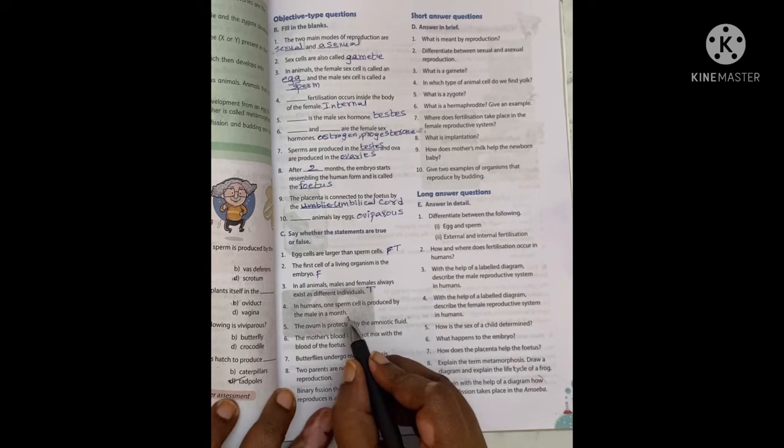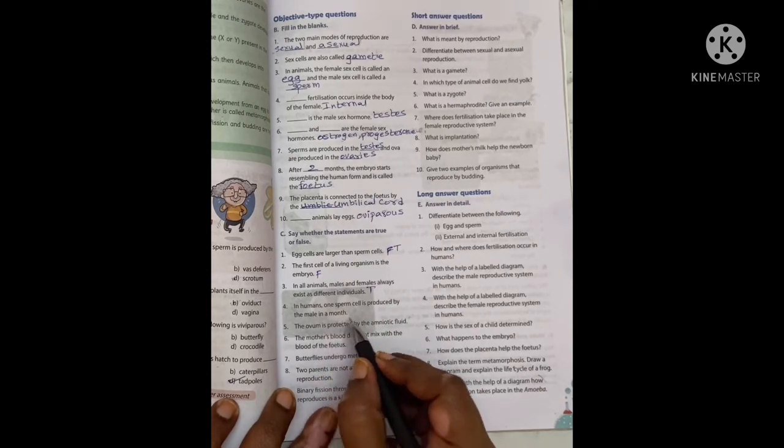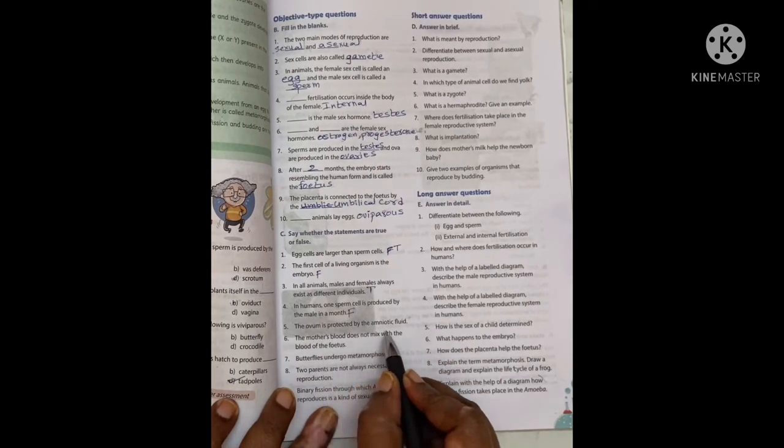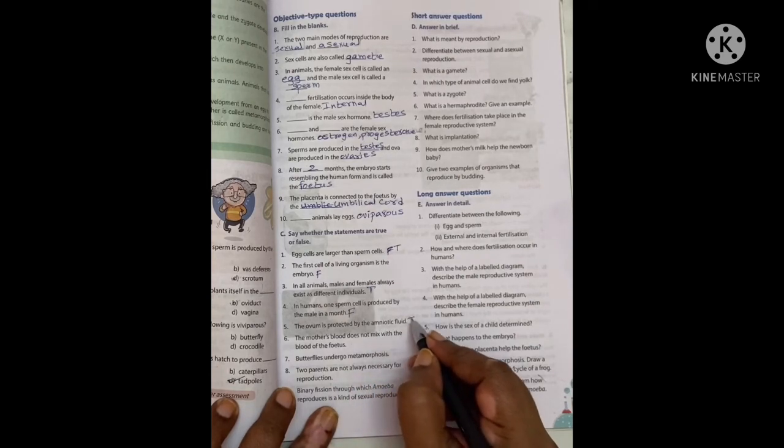In humans, one sperm cell is produced by the male in a month. It's false. The womb is protected by the amniotic fluid. True.